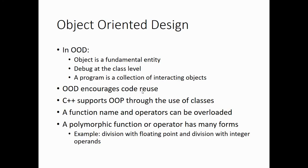In object-oriented design, the object is a fundamental entity. We debug at the class level — we get those classes bulletproof and working, and then we can put those classes into the overall code. This encourages code reuse: if you're making a program that has a character and you put together a really good character class and want to make a sequel, you can reuse that character class in the sequel. C++ supports object-oriented programming through the use of classes, and function names and operators can be overloaded. A polymorphic function or operator has many forms — for example, division with floating point versus division with integer operands.